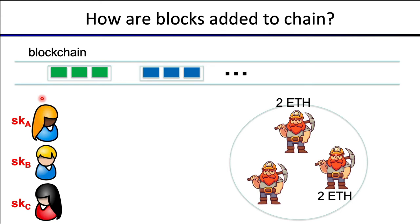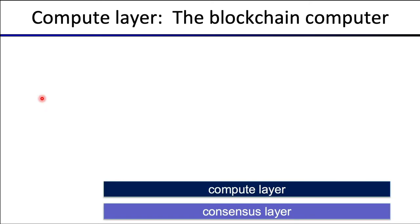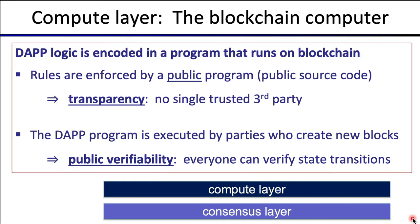That's all I want to say about consensus in this course. Consensus is a very big topic but it's not the topic of our DeFi course, so let's move on to the next layer: the compute layer, what we call the blockchain computer, which allows us to run applications on top of a consensus layer. Once we have consensus, we have a way to write information so that it can never be removed, and we can use that to actually implement a program.